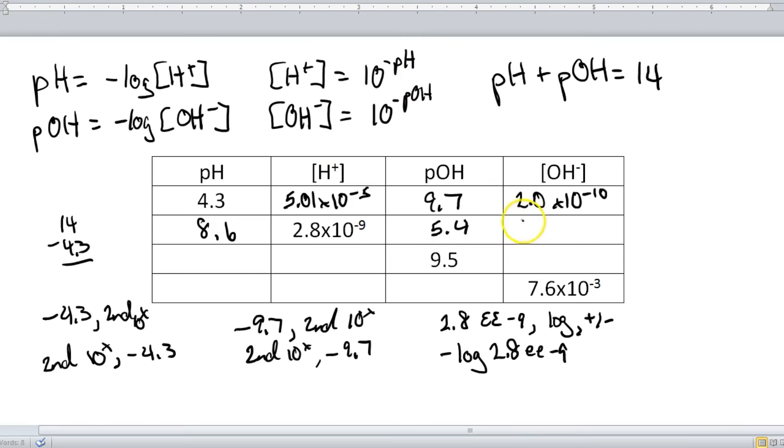So when you do that, you end up with 3.98 times 10 to the negative 6th power.